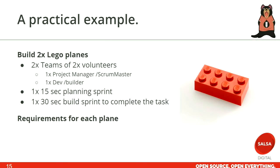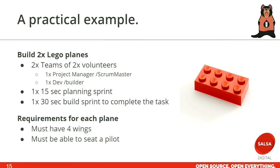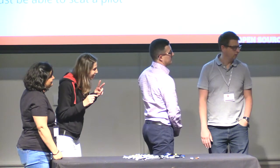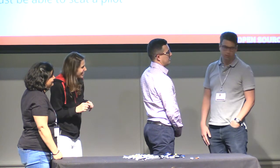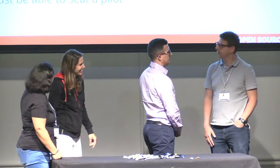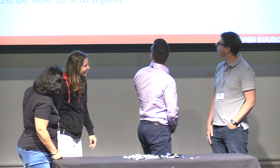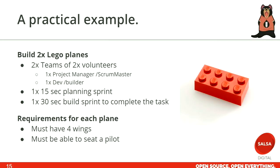There are requirements — fairly high level. You just have to have four wings and you must be able to seat a pilot. You have two pilots at the front. So the question was asked: four wings per plane? Yes, each plane has to have four wings.